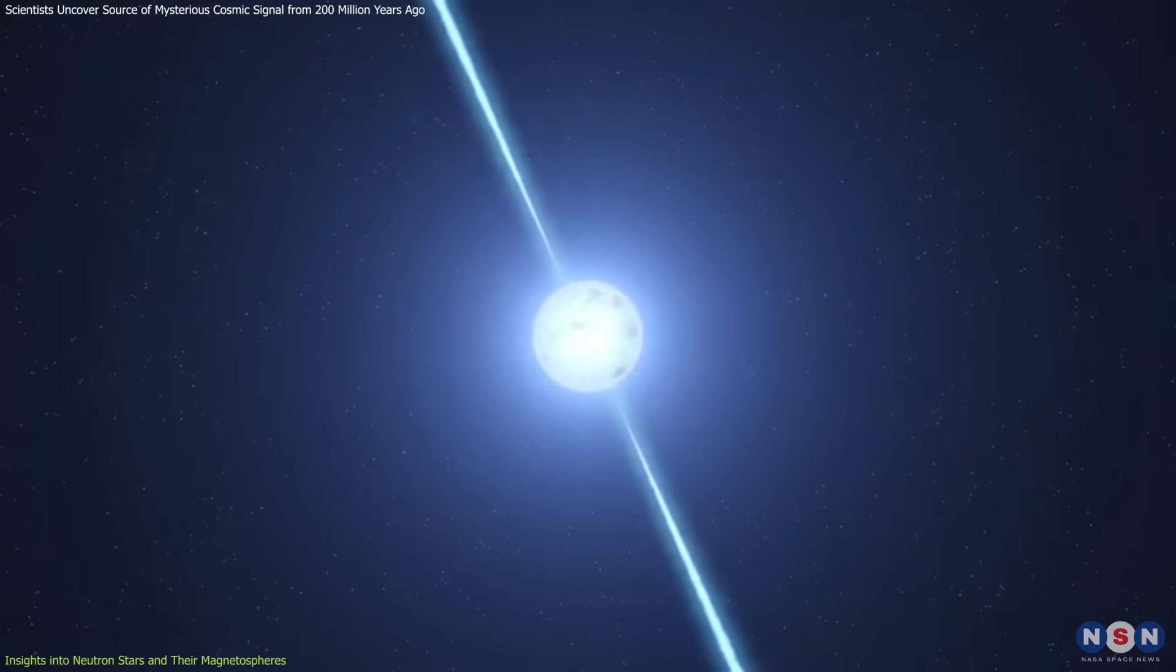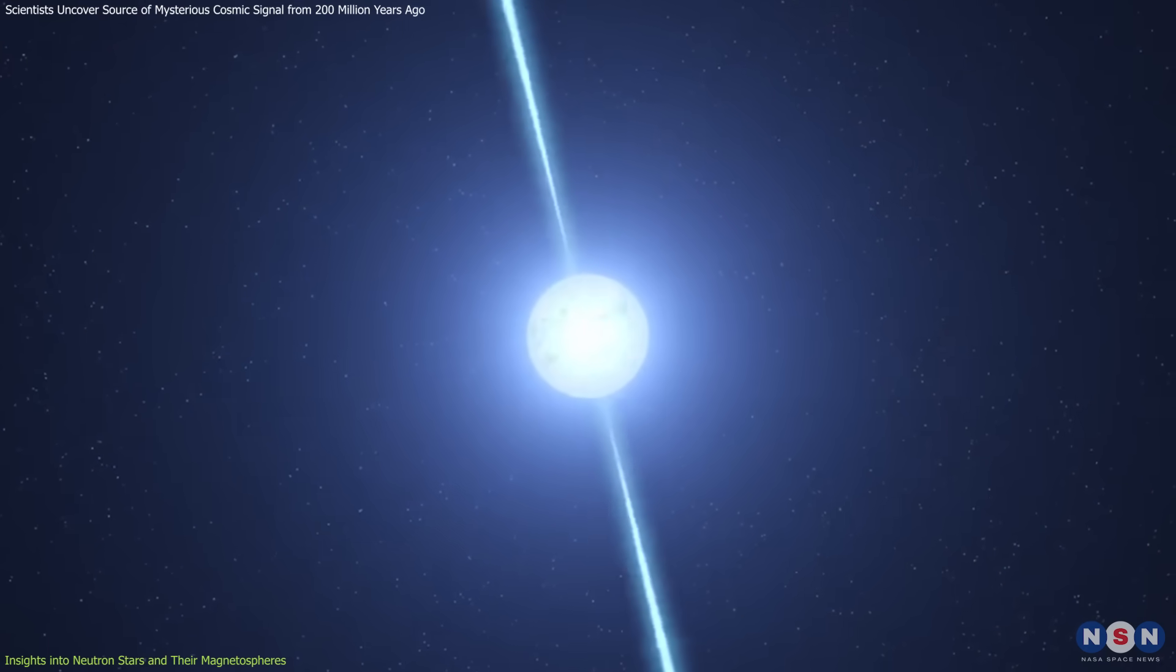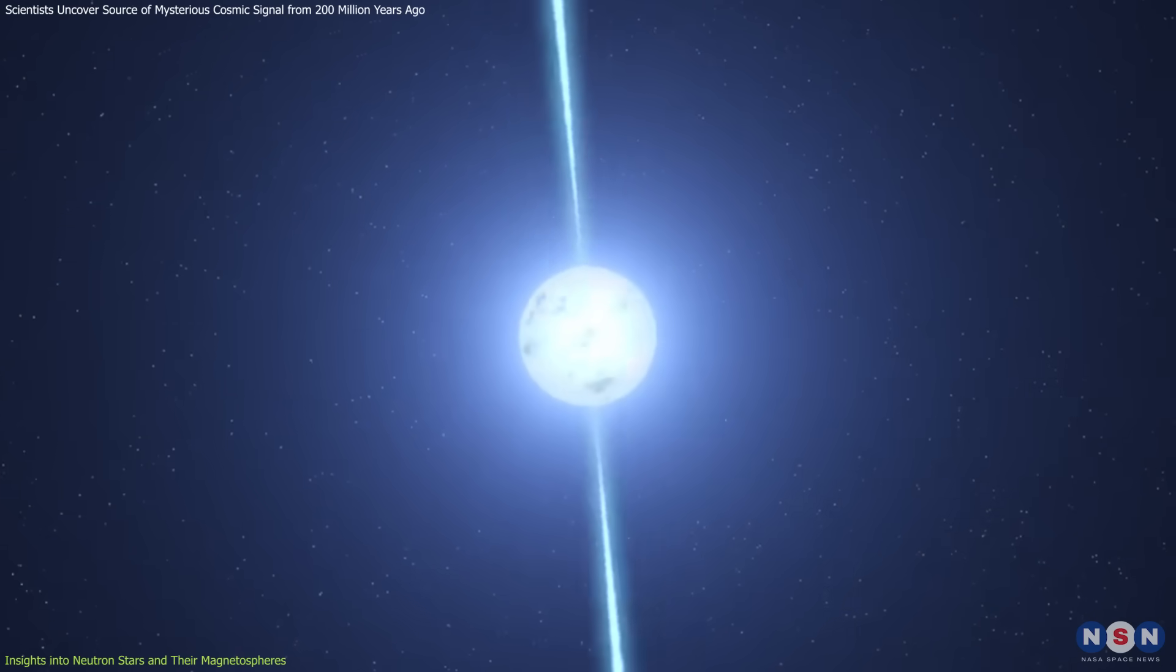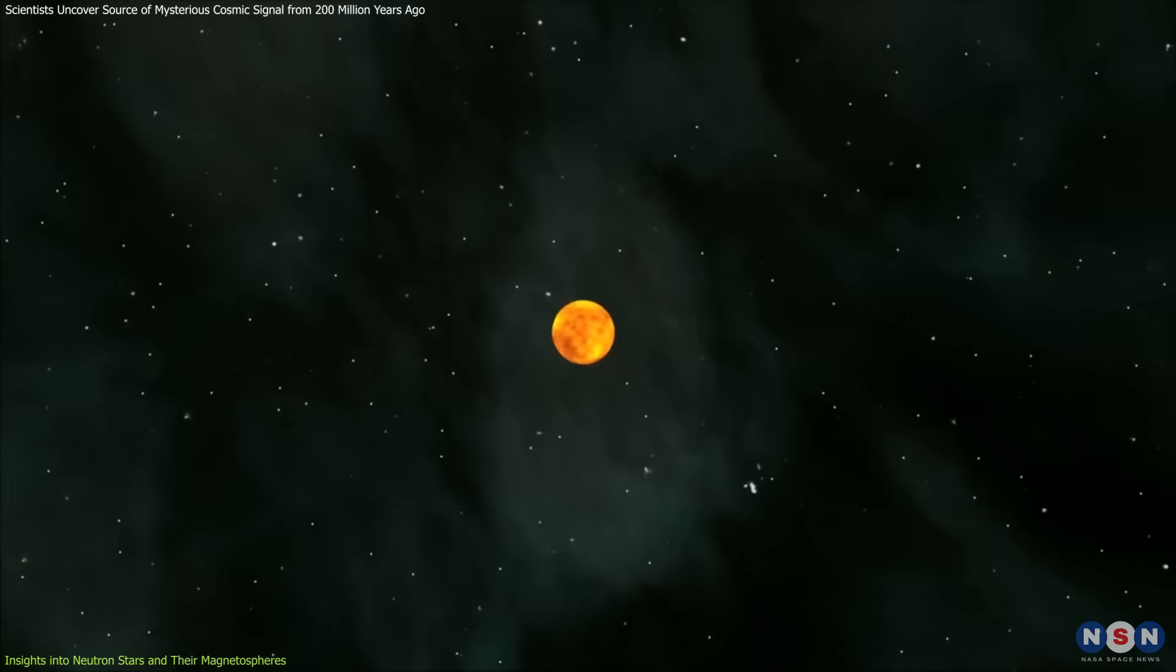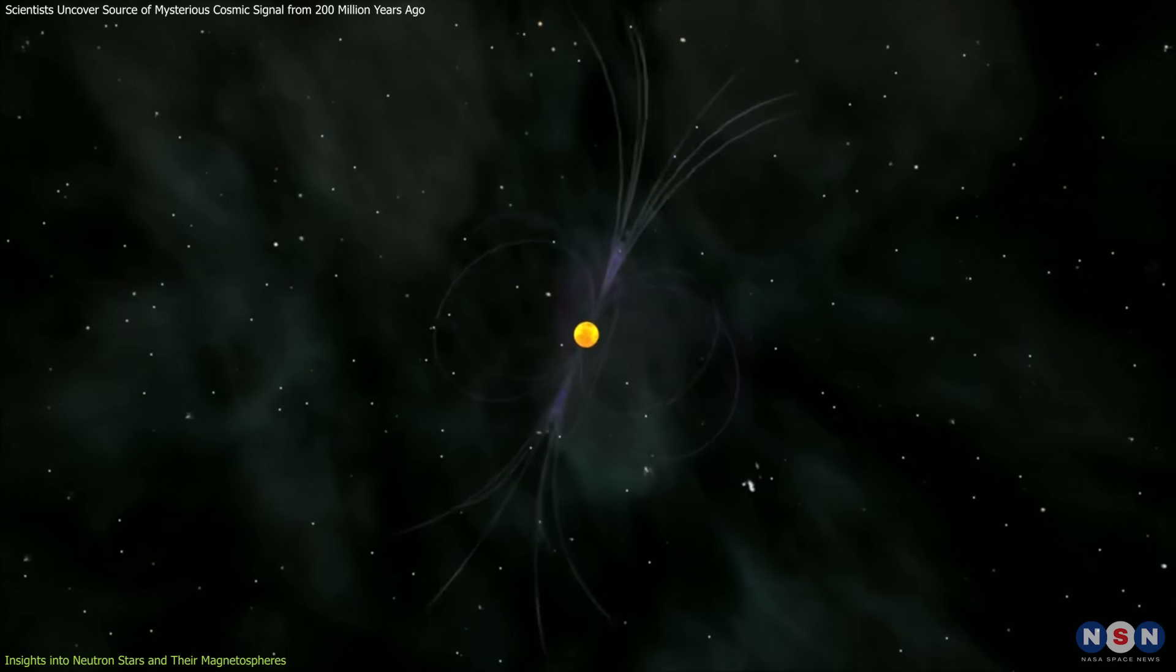Beyond their magnetic fields, neutron stars also rotate at incredible speeds, with some spinning hundreds of times per second. This rapid rotation, combined with their magnetic forces, can create pulsars.